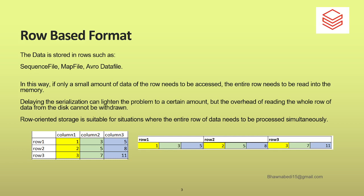If you look at the diagram in the PPT — row 1, row 2, row 3, column 1, column 2, and column 3 — how this data will be stored? It will be stored in the form of rows. Row 1 contains 1, 3, 5. Row 2 contains 2, 5, 8. Row 3 is 3, 7, 11. This is how the data is actually stored — this is a row-based format where your whole data is stored in row format.